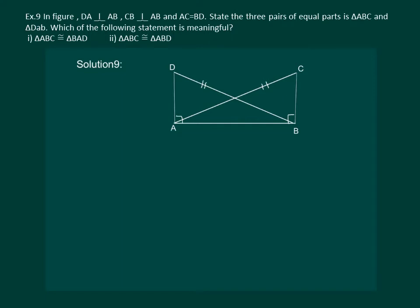So the three pairs of equal parts are angle ABC equal to angle BAD equal to 90 degrees, AC is equal to BD which is given, and AB equal to BA is the common side.